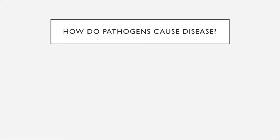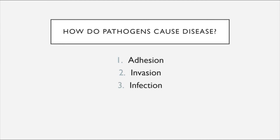Now we'll move on to the bulk of Chapter 15, discussing how pathogens cause disease — the microbial mechanisms of pathogenicity. From the pathogen's perspective, there are stages by which it causes disease: first, adhesion, where the microbe is introduced to the body; then invasion, where the microbe spreads; then infection, where it proliferates; and finally transmission, where it exits the host and moves to other hosts. We'll examine these steps for different categories of microorganisms — bacteria, viruses, protozoans — paying special attention to virulence factors.